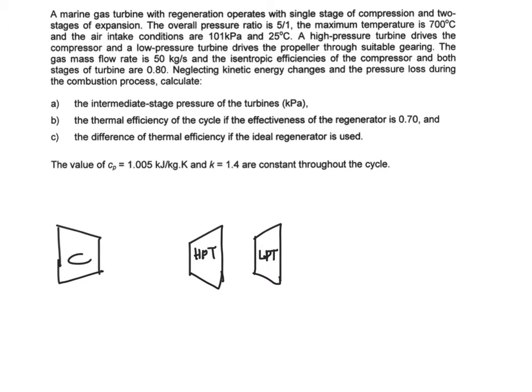And then it says that the overall pressure ratio is 5 over 1. Meaning that you have pressure ratio which is your P max over your P min is equal to 5.